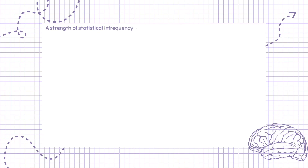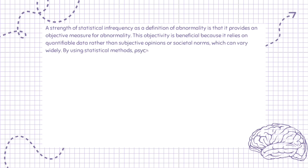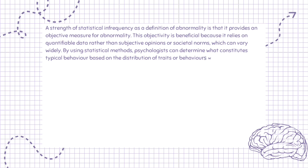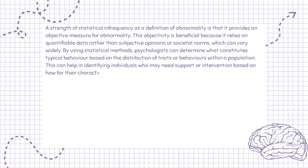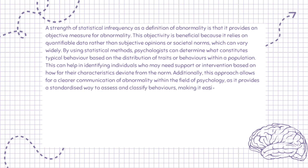A strength of statistical infrequency as a definition of abnormality is that it provides an objective measure for abnormality. This objectivity is beneficial because it relies on quantifiable data rather than subjective opinions or societal norms, which can vary widely. By using statistical methods, psychologists can determine what constitutes typical behavior based on the distribution of traits or behaviors within a population. This can help in identifying individuals who may need support or intervention based on how far their characteristics deviate from the norm. Additionally, this approach allows for clearer communication of abnormality within psychology, providing a standardized way to assess and classify behaviors, making it easier to conduct research and compare findings across different studies.